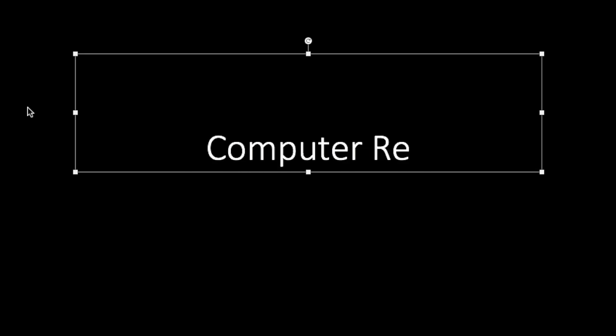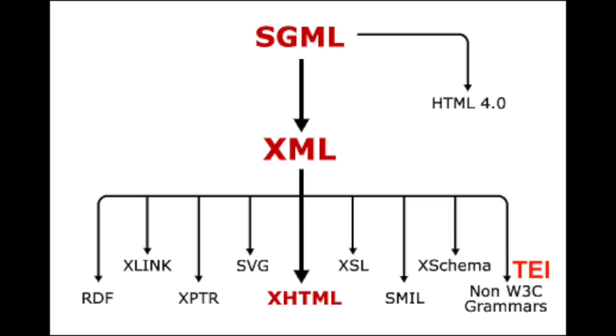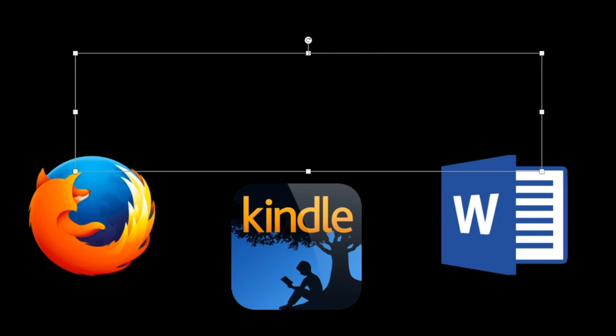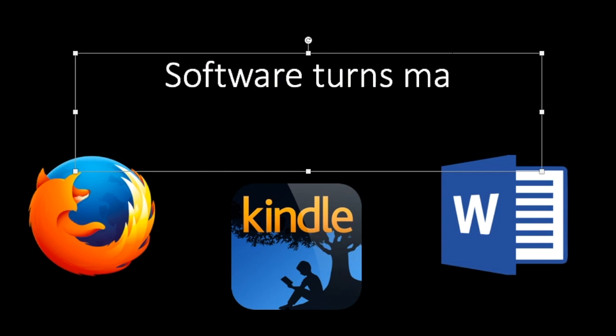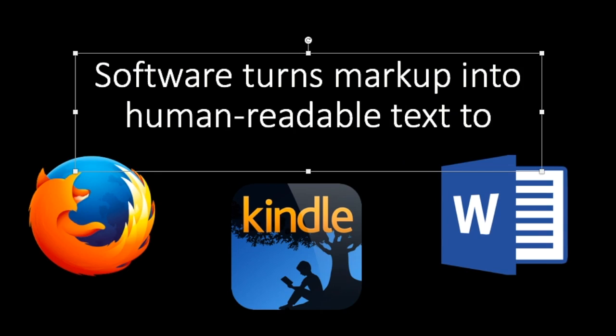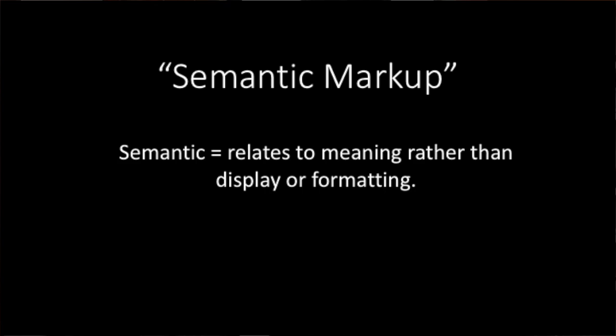What is a markup language? To markup a text means to add extra computer-readable information in the form of tags, also called elements. HTML is a markup language. Markup languages are all over the place, even though they are usually in the background. Normally other software languages transform markup languages into something that is easier for us to read, like on a webpage or an ebook. What we care about is something called semantic markup.